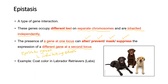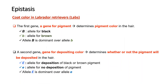A popular example of epistasis is coat color in a breed of dog known as Labrador Retrievers, or Labradors. This dog is best known as Labrador Retrievers and is frequently trained to assist people with blindness or to do detection work for law enforcement agencies.